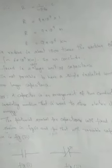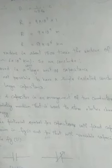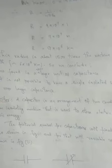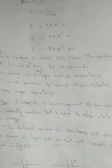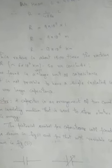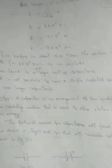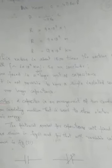A capacitor is an arrangement of two conductors separated by an insulating medium, used to store electric charge or electric energy. In simple words, just like a tank is a device used to store water, similarly a capacitor is an electric device used to store charge. When you store electric charge, it means at the same time you are storing electric energy.